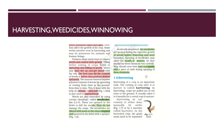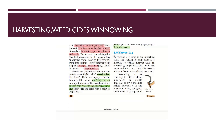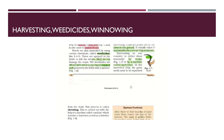Now we are going to discuss harvesting of the crop. Harvesting means cutting of the crop after it is mature. The harvested crops are pulled out or cut close to the ground. It usually takes three to four months for a cereal crop to mature. Harvesting is done either by a sickle, which is a tool used to cut down mature crops, or by a machine called a harvester.